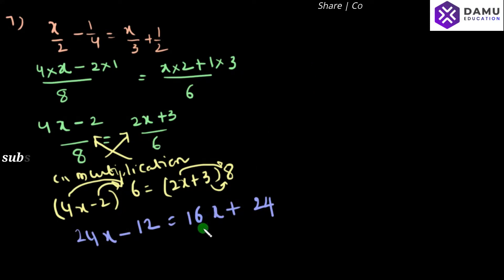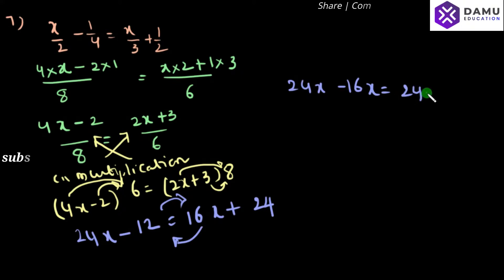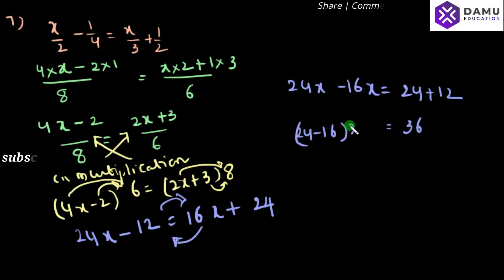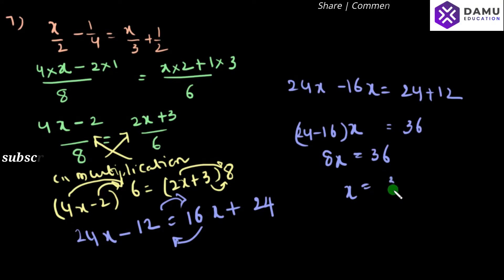So, shift all the variables to this side and constants to the right side. So, 24x minus 16x will be equal to 24 plus 12. 24 minus 16: from 20, 16 subtraction means 4 will come, again add 4 to that.